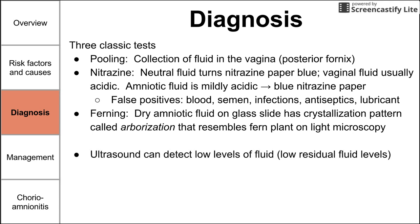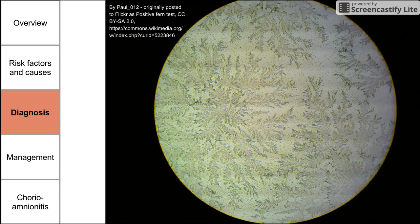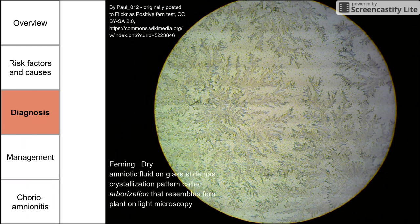Additional tests can help diagnose premature rupture. Ultrasound can detect low fluid levels resembling oligohydramnios — the low residual fluid remaining after leakage. There are also newer PROM-specific tests that detect chemicals or proteins unique to amniotic fluid. The next slide shows an example of ferning under the microscope, where the dry amniotic fluid displays the arborization crystallization pattern that looks like a fern plant.